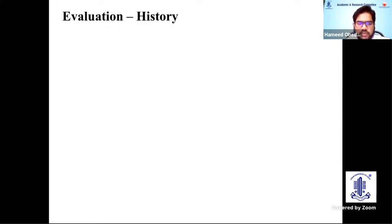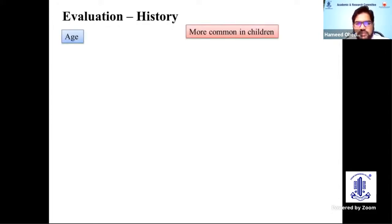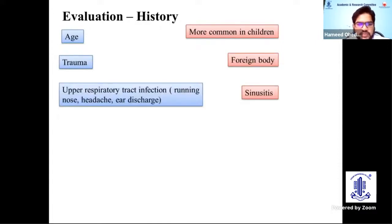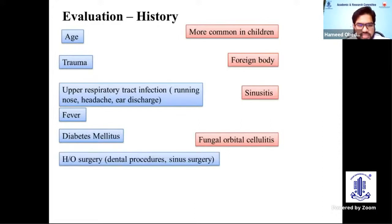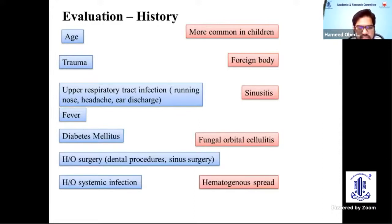Evaluation of a case of orbital cellulitis is very important. Age is foremost, as it is more common in children. History of trauma helps identify the presence of a foreign body. History of upper respiratory tract infection points towards sinusitis. History of fever, diabetes mellitus — since uncontrolled diabetes can lead to fungal orbital infection in adults — any past surgery, systemic infection, and other ocular complaints should all be asked in detail.